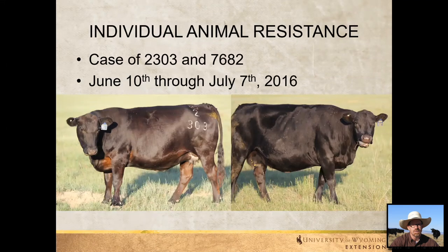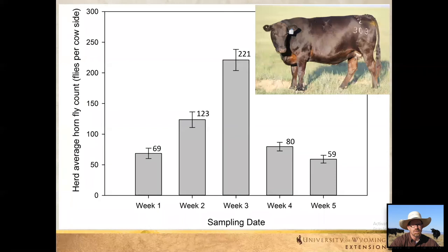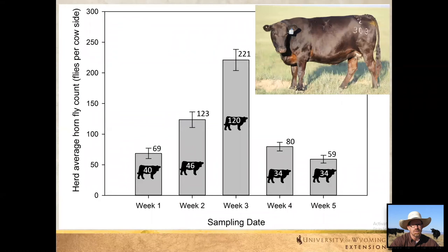Here's the animal resistance concept — what I call the case of cow 2303 and cow 7682. These are two companion cows in the same herd, same pasture, same environment, sampled over a series of weeks in 2016. Looking at cow 2303 relative to the herd average: week one she had 40, herd average was about 70; week two she had 46, herd average was 123; week three, 120 versus a herd average of 220; week four, 34 versus 80; week five, about 34 again. Every week she was below the average — she might be a cow with some resistance to horn flies. We might call her resistant.